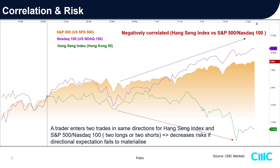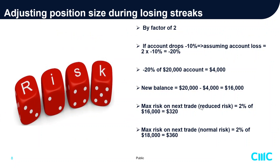Another way to reduce risk is to adjust position sizing. Recalling from Part 2 of the Risk Management Tactics, the 2% risk factor means a maximum risk of 2% per trade. If I have three consecutive losing trades — which is a real probability — it could be due to bad luck or a trading system that doesn't gel with the current financial instrument. In that case, if I start to lose three times in a row, I could reduce my risk by a factor of two.